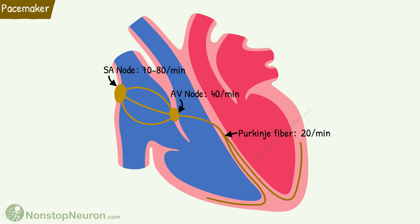The fastest of them all dominates and determines the heart rate. As the SA node is the fastest, normally the SA node is the pacemaker of the heart. It is also called the primary pacemaker of the heart.